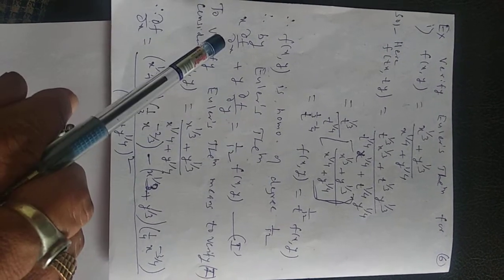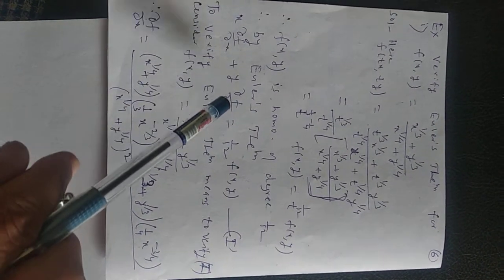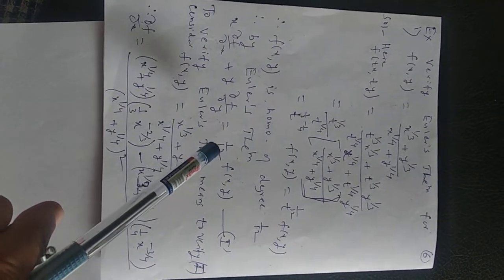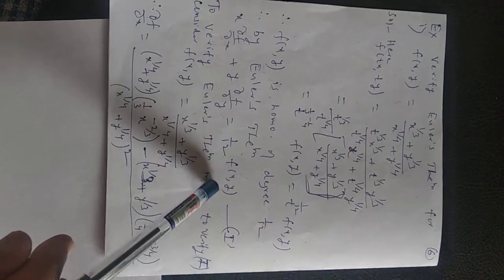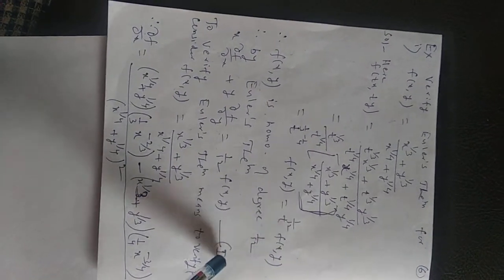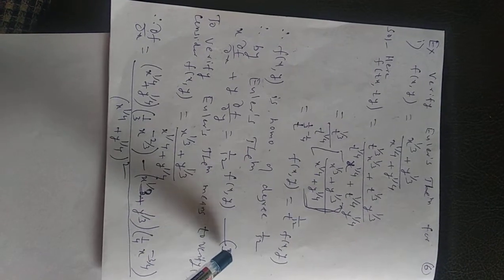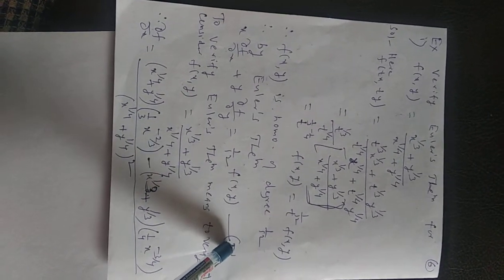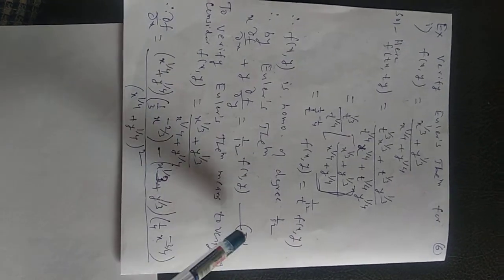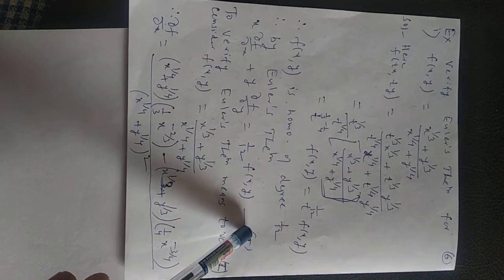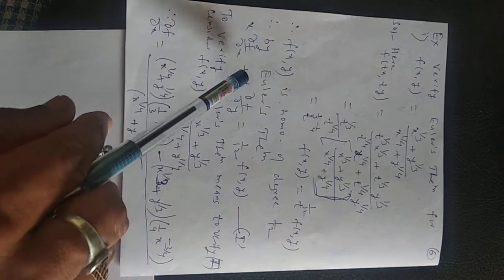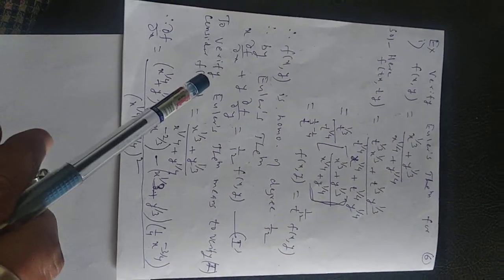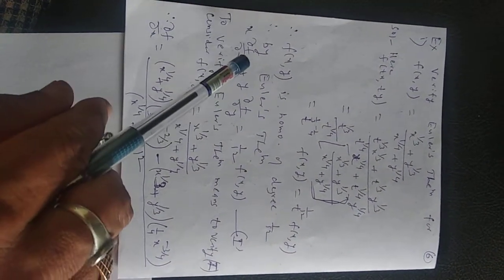Therefore, by Euler's theorem, x · ∂f/∂x + y · ∂f/∂y = n · f(x,y) = (1/12) · f(x,y). This is the result of Euler's theorem, and to verify Euler's theorem means to verify this equation. So what is LHS? LHS is this one. We first find, try to find, LHS.